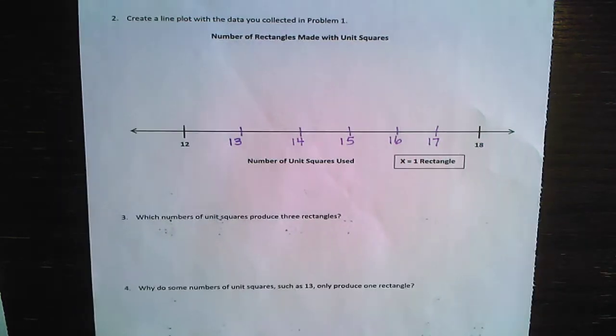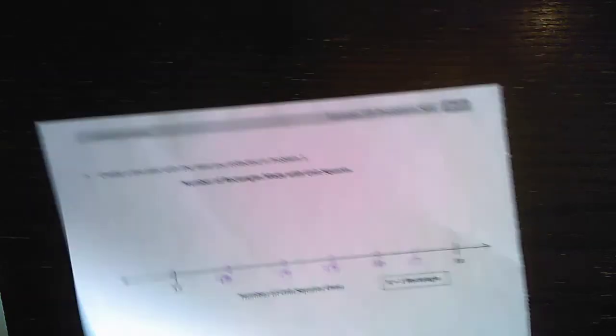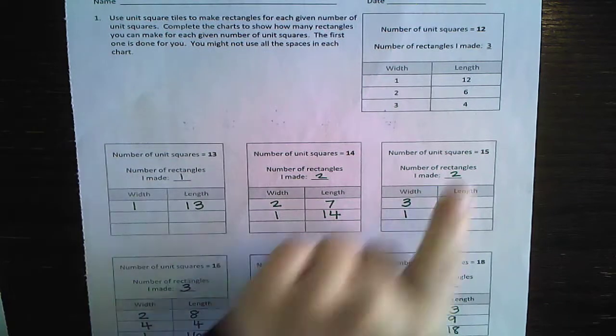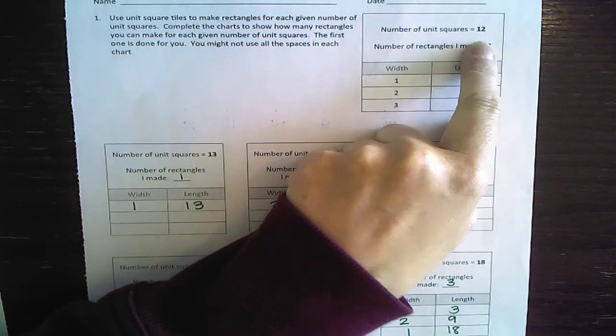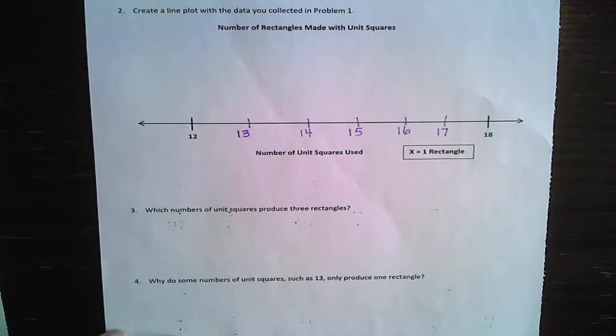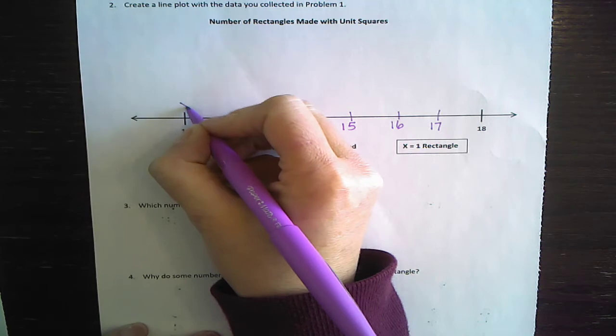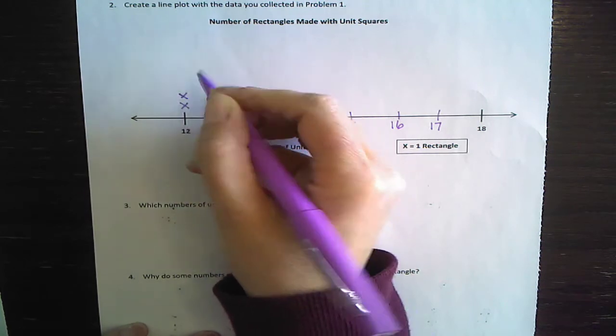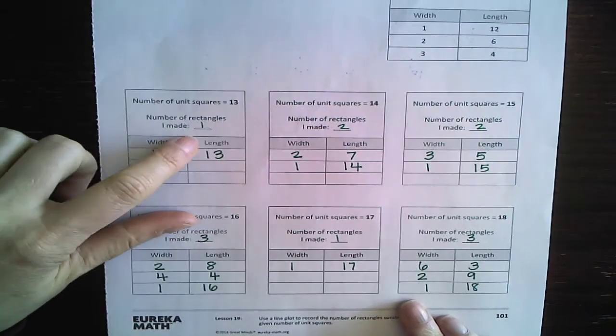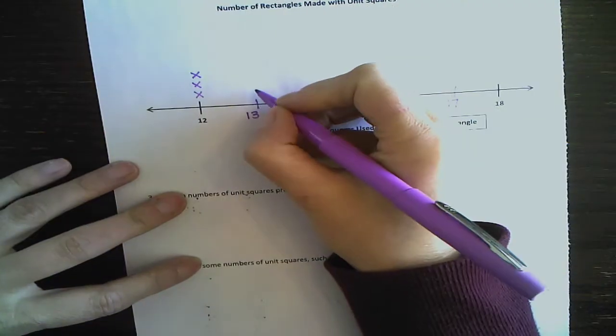Now we just need to check how many they each have. So 12, they did it for us. Thank you. Made three rectangles. So let's put three Xs on 12. One, two, three. How about 13? We already discussed, right? 13, just the one, just the one for 13.